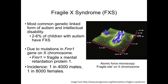Fragile X syndrome is the most common genetically linked form of autism and intellectual disability. Up to 6% of children with autism have Fragile X syndrome. Fragile X syndrome is caused by mutations in the FMR1 gene on chromosome X. FMR1 stands for Fragile X Mental Retardation Protein 1.